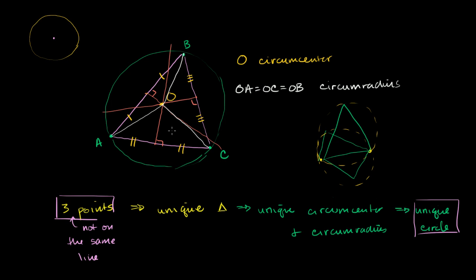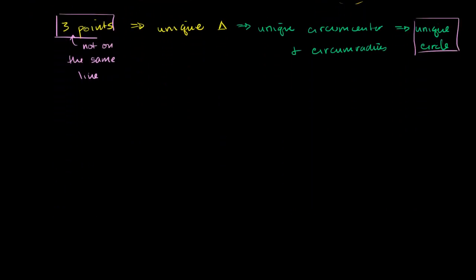Three points lead to a triangle and a unique circle. Now another question is: if I have just a circle, and it's circumscribed about an arbitrary triangle, is the center of that circle necessarily the circumcenter? So if I draw a circle right over here, its center is right over there. And if I draw an arbitrary triangle where all of the vertices of that triangle are on this circle, is this center necessarily the circumcenter of that triangle?